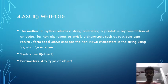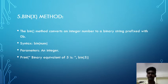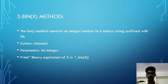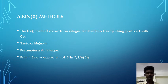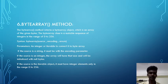The fifth one is bin(x) method. The bin() method converts an integer number to a binary string prefixed with '0b'. The syntax is bin(num), where the parameter is an integer. For example: print('binary equivalent of 5 is:', bin(5)).